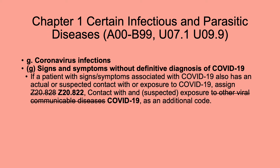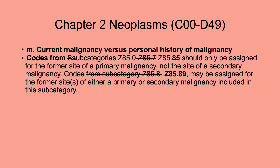Next, coronavirus. Every year there's another change. They changed to a more specific code: Z20.828 was crossed out and changed to Z20.822. This was changed online but not in the printed 2024 guidelines. Z20.828 referred to contact with suspected exposure to other viral communicable diseases, while Z20.822 is specific to COVID-19. So this is now more specific, which is important — always code as specifically as possible.